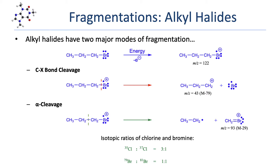With alkyl halides, there's one more useful piece of information we can often extract from a mass spec. The two most common halogens, chlorine and bromine, actually exist in nature as two different isotopes. Chlorine exists as both chlorine-35 and chlorine-37, and the ratio of those two isotopes is 3 to 1. Bromine also exists as a mixture of two isotopes with masses of 79 and 81, with a ratio of 1 to 1. Any fragment that has a halogen atom in it will give rise to two peaks with two different masses separated by 2 AMU. A three-to-one ratio of the lighter mass to the higher mass means you have a chlorine, and a one-to-one ratio means you have a bromine.